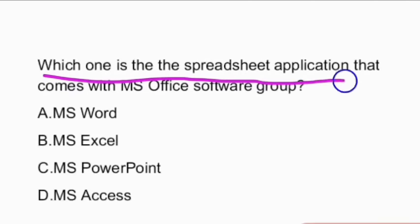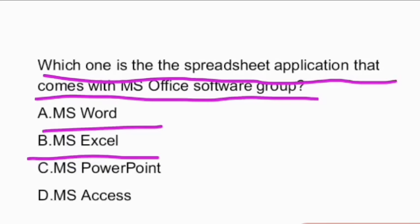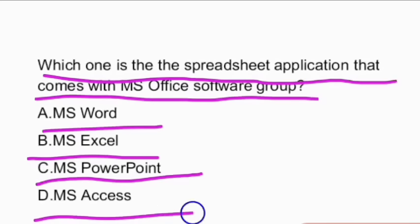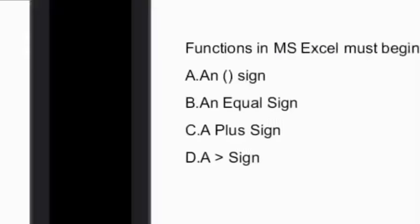Next question: which one is the spreadsheet application that comes with MS Office? The options are MS Word, MS Excel, MS PowerPoint, and MS Access. The answer is MS Excel — option B is the right answer.